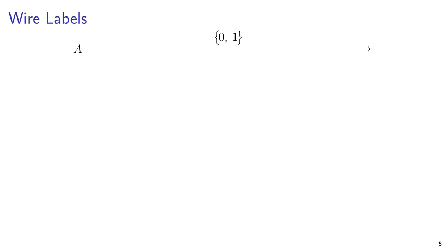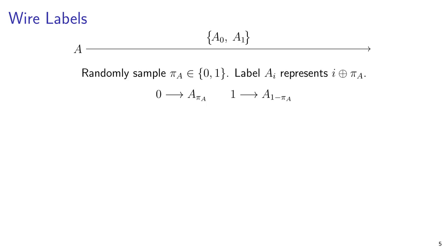Now let's look at how garbled circuits work. In a garbled circuit, the function f is broken down into gates connected with wires. The garbler will encrypt the circuit. Each wire is given two random, unguessable strings called wire labels, representing false and true. The evaluator will only ever know one of the two wire labels for each wire. It must not learn the other wire label. Each gate must provide some way for the evaluator to decrypt only the correct output wire label. To hide which wire label represents true, the garbler samples the point and permute bit pi A.